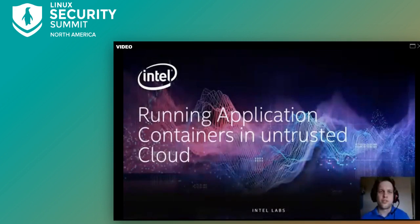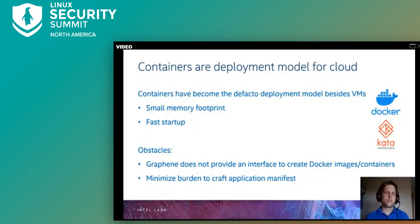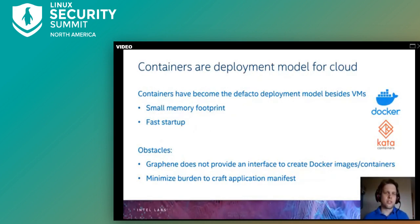Thank you for the introduction of Graphene. We will now switch gears and look at how to use Graphene for application containers. Containers have become the de facto deployment model for the cloud besides virtual machines — they provide a small memory footprint and fast startup time. We cannot directly apply Graphene to container frameworks; we first have to overcome two obstacles. The first is that Graphene does not provide an interface to create images or containers. Second, while providing hand-crafted manifests is possible, it's a huge burden on the application developer.